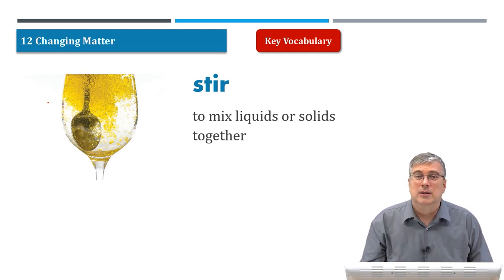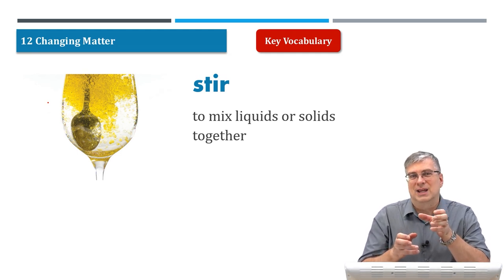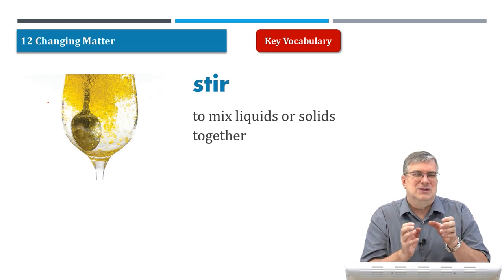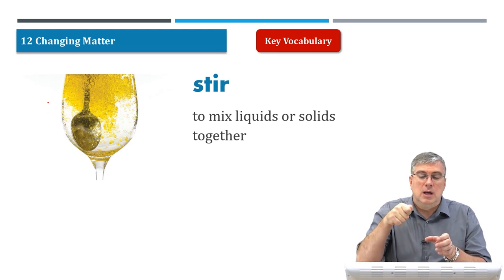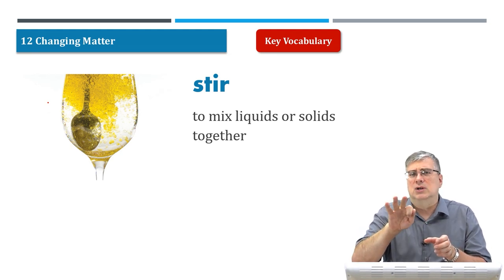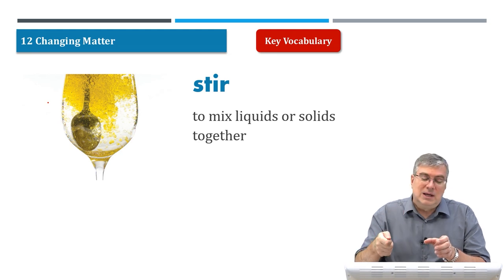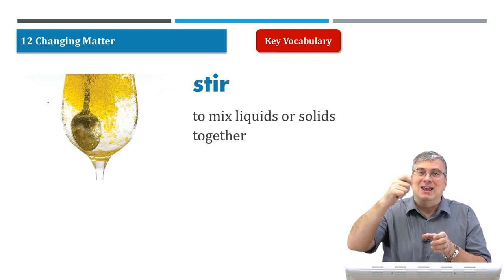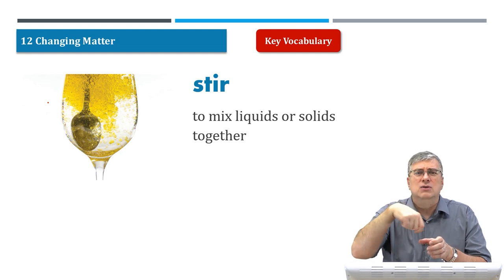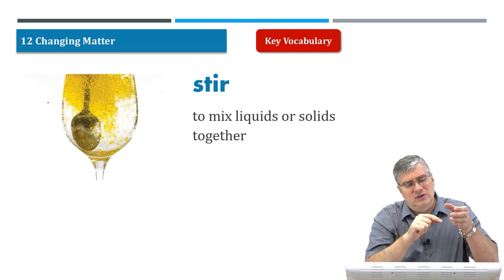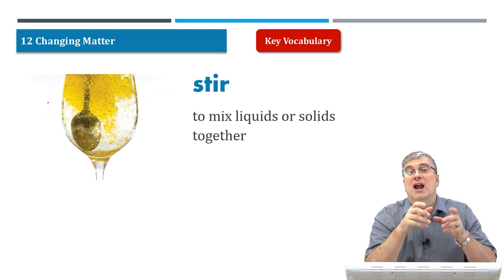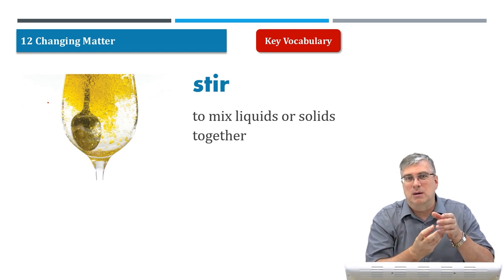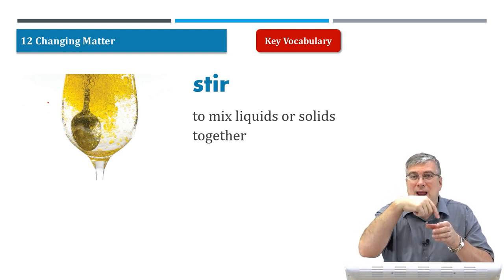You probably stir many times in your life already. Sometimes your drink — let's say you have tea and the tea is too bitter. So you want to change the taste. You might take some sugar, put the sugar in the tea — don't put too much sugar in the tea. Put some sugar in the tea and then use a spoon and you stir it. Because if you don't stir it, the sugar just goes to the bottom of the tea and stays there. You don't want that. You want the sugar to mix with the liquid so that everything is sweet, not just the bottom part. So you stir the sugar — and what happens?